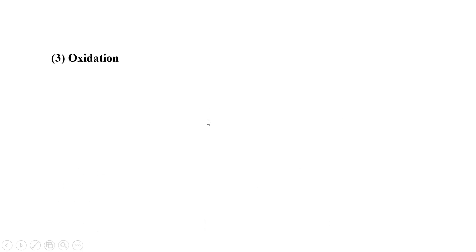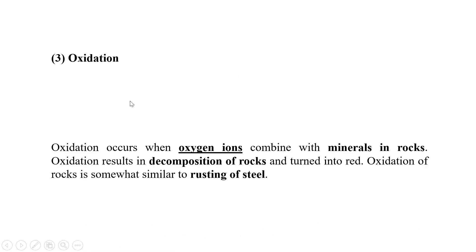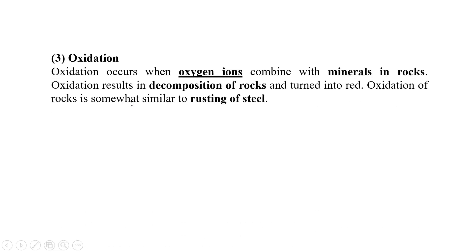Next is oxidation. Oxidation is just like the rusting of steel. When steel comes in contact with oxygen, rusting takes place. Similarly, when rocks are exposed to oxygen, the minerals are detached from the rocks. Oxidation occurs when oxygen ions combine with minerals in rocks. Oxidation results in decomposition of rocks and turns them red in color.